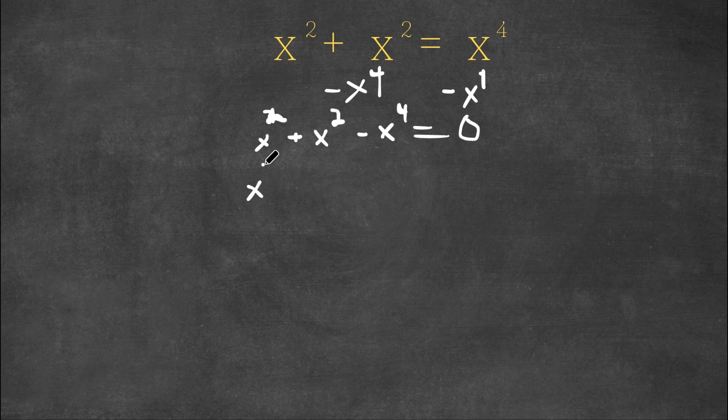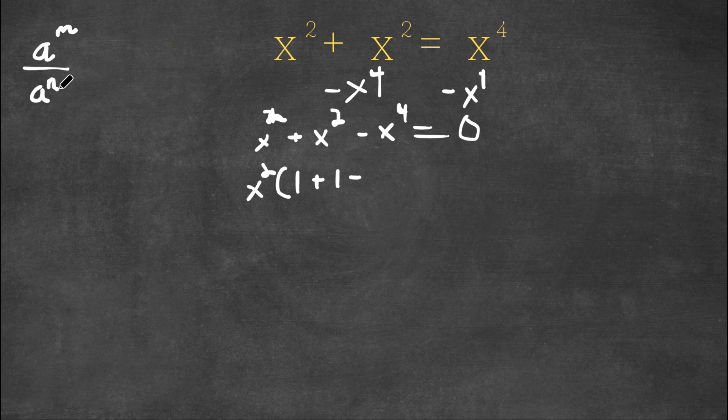So now we have x squared times 1 plus 1 minus x to the power of 4 divided by x squared. Well, if we have something in the form a to the power of m over a to the power of n, this is equal to a to the power of m minus n. So x to the power of 4 over x to the power of 2, that's x to the power of 4 minus 2, and 4 minus 2 is 2. So this would be x squared.